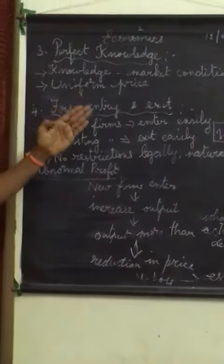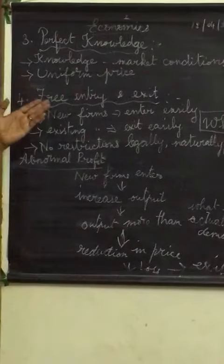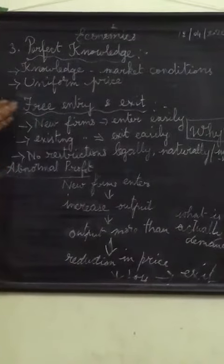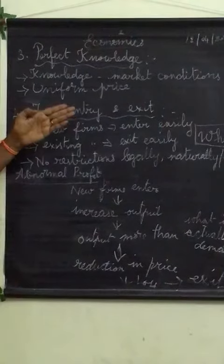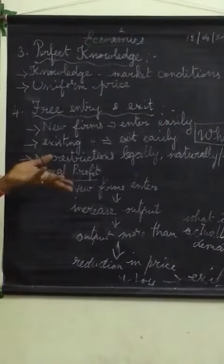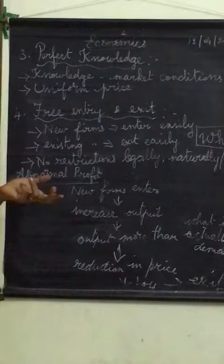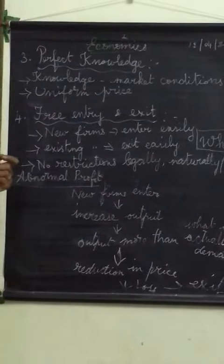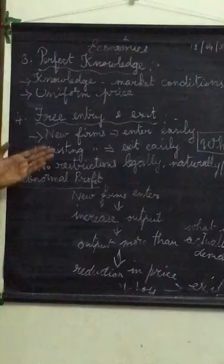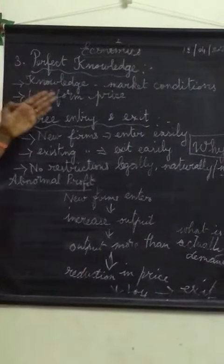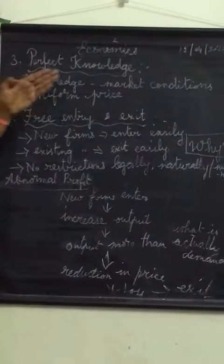Next feature is perfect knowledge. Each and everyone, all the buyers and sellers, they are aware of the market conditions. What's the supply there, what's the total output there, and what price is prevailing there in the market condition and the quantity demanded. Each and everyone, they are aware of the market conditions.